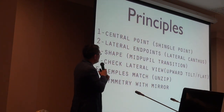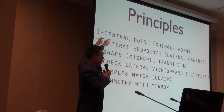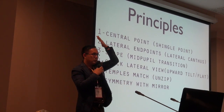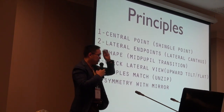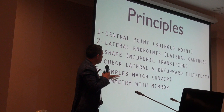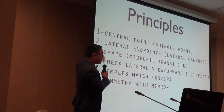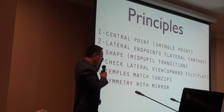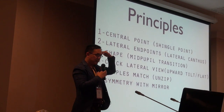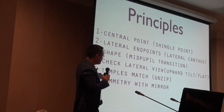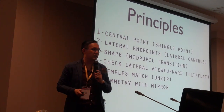Here are the points in summary, then we'll go through an exercise. First, the central point — remember, that's the transition from vertical to horizontal. Second, lateral endpoints at the lateral canthus; we'll show you how to draw that. Third, the shape with the transition from the mid-pupil. Fourth, check from the lateral side. Fifth, make sure temples match. And sixth, symmetry.